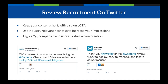On Twitter, keep your content short, have a strong CTA, and make sure you're getting across to your users what you want them to do. Not all of your users will follow you on Twitter, so be sure to use industry-relevant hashtags. For example, Wink Reports hashtagged 'business intelligence,' which helped them reach over one million Twitter users through that hashtag — something they would have missed out on if they had only sent the tweet to their regular followers.